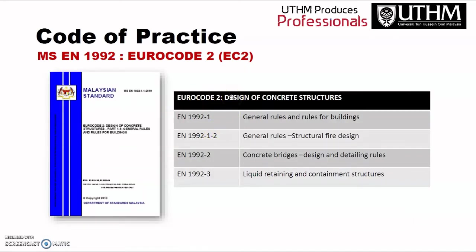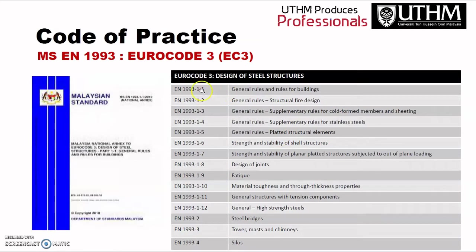Euro code 2 covers general rules and rules for buildings — it is about the design of concrete structures. You have general rules for buildings, structural fire design, design and detailing. Number three covers liquid-retaining and containment structures. Coming videos will provide example design calculations. Euro code 3 is for steel structures — you can read about general rules, strength and stability for shear structures, planar plated structures, and so on.